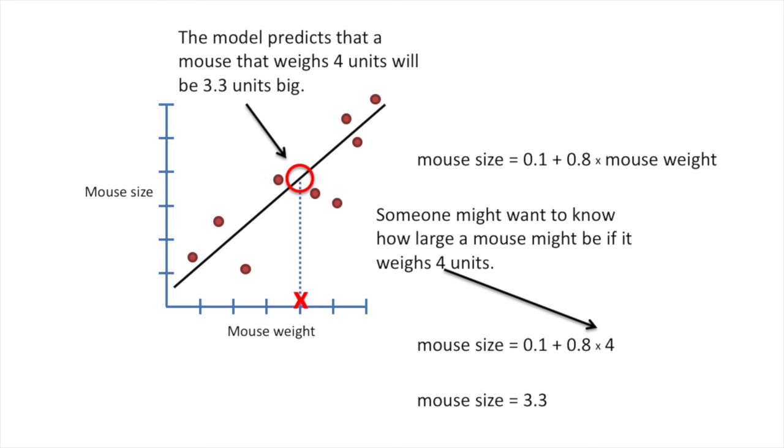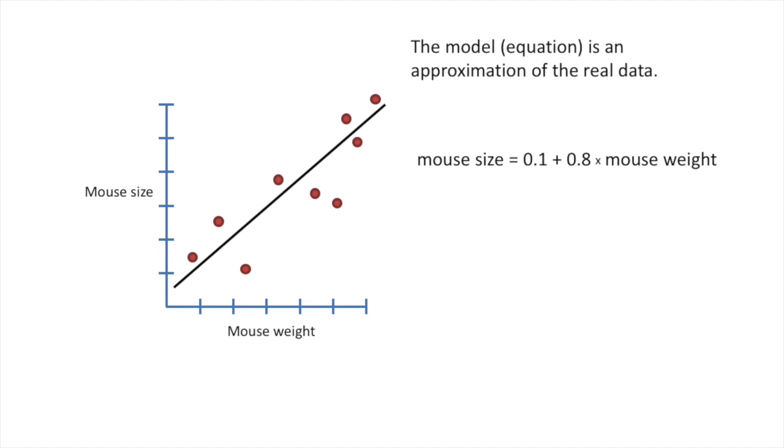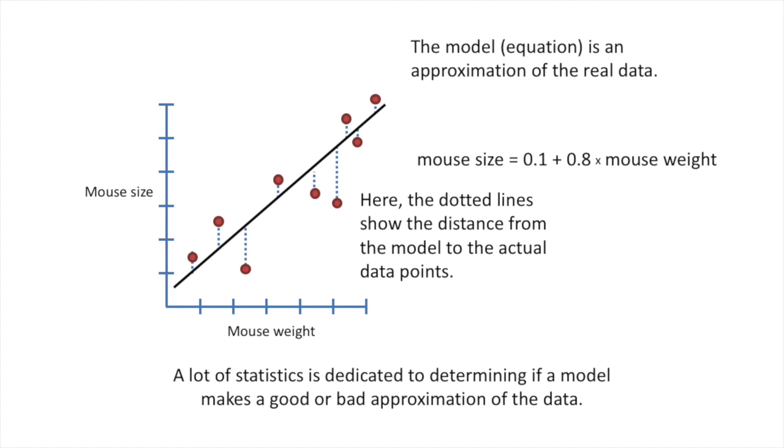The model predicts that a mouse that weighs 4 units will be 3.3 units big. The model, or equation, is an approximation of the real data. Here, the dotted lines show the distance from the model to the actual data points. A lot of statistics is dedicated to determining if a model makes a good or bad approximation of the data.